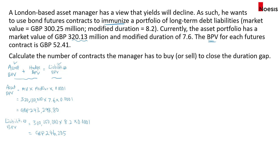Next, we calculate the portion for the hedge BPV. Expanding the formula: Asset BPV plus the number of futures contracts multiplied by the futures BPV per contract equals the liabilities BPV. We have the asset BPV, the futures BPV per contract of £52.41, and the liabilities BPV.